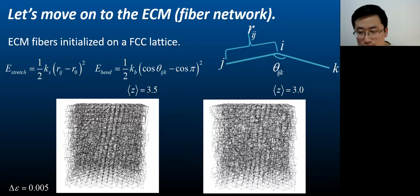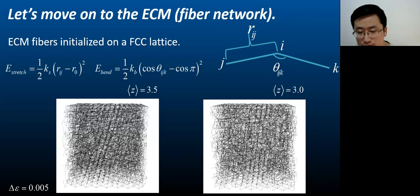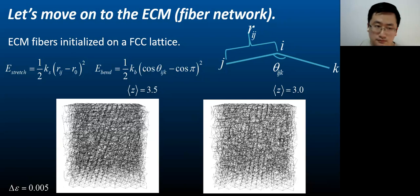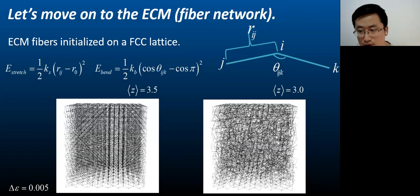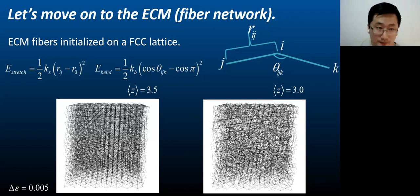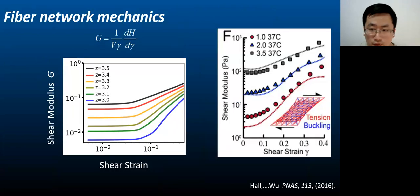The movie shows the configurations of the networks under shearing deformation for two different values of the Z, which is the average coordination number. Now we can measure the shear modulus of the fiber network as a function of shear strain. Our simulation qualitatively reproduced the experimentally measured shear rheology data for different coordination numbers or collagen concentrations.